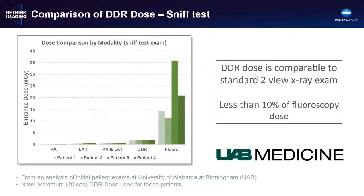To understand the dose of a thoracic acquisition, we examined the dose for four patients, all of whom received conventional two-view x-ray, DDR, and fluoroscopy at the University of Alabama Birmingham. The fluoroscopic entrance dose ranged from 11 to 36 milligray, with an average of 21 milligray. The DDR dose for the maximum-duration 20-second technique was just 1.78 milligray — again comparable to conventional static radiography, as we saw with the shoulder.